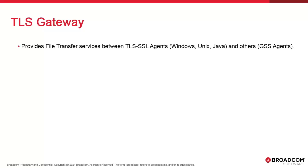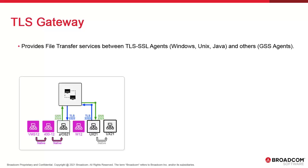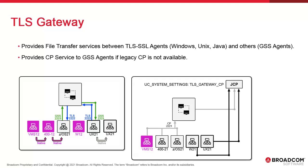Version 21 introduces the TLS Gateway. TLS-SSL communications are limited to a subset of agents, which means TLS and non-TLS agents need to cohabitate and share file transfer services. TLS-SSL agents are version 21 UNIX, version 21 Windows, and version 21 Java. The purpose of TLS Gateway is twofold: first, it powers file transfer mechanisms between TLS and non-TLS agents; second, it provides a CP port for non-TLS agents when no conventional CP service is available. The TLS Gateway is an external component that installs, configures, and authenticates the same way as a Java agent, and requires INI configuration and TLS encryption.